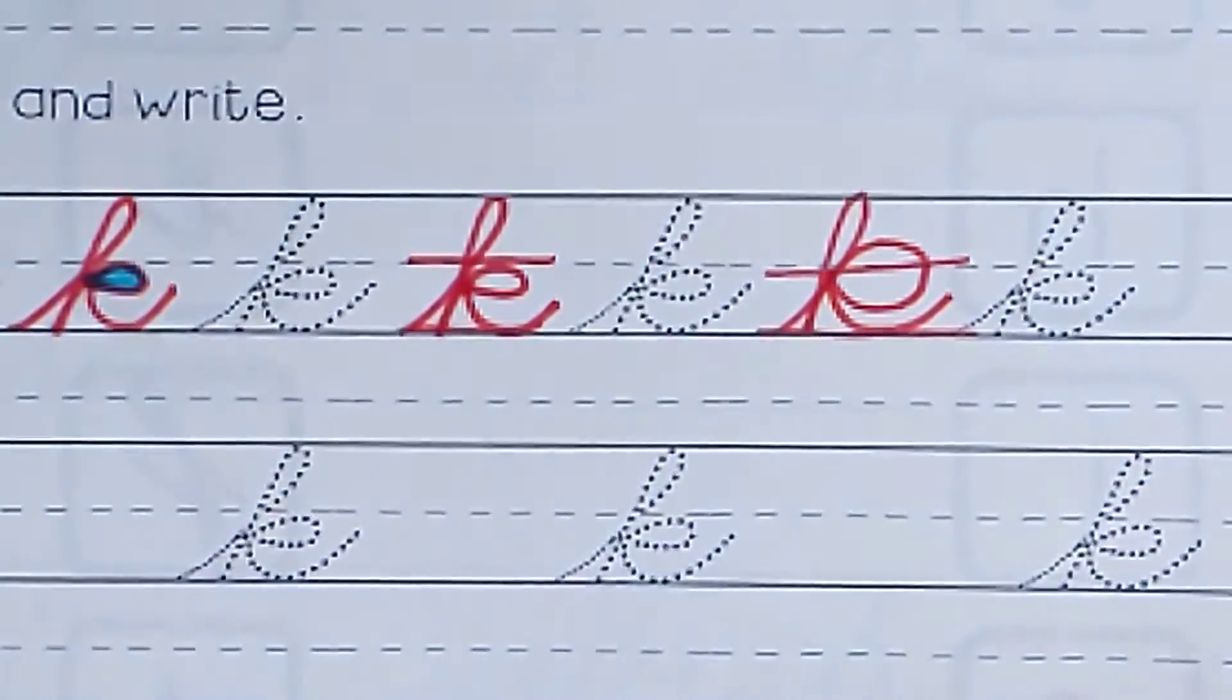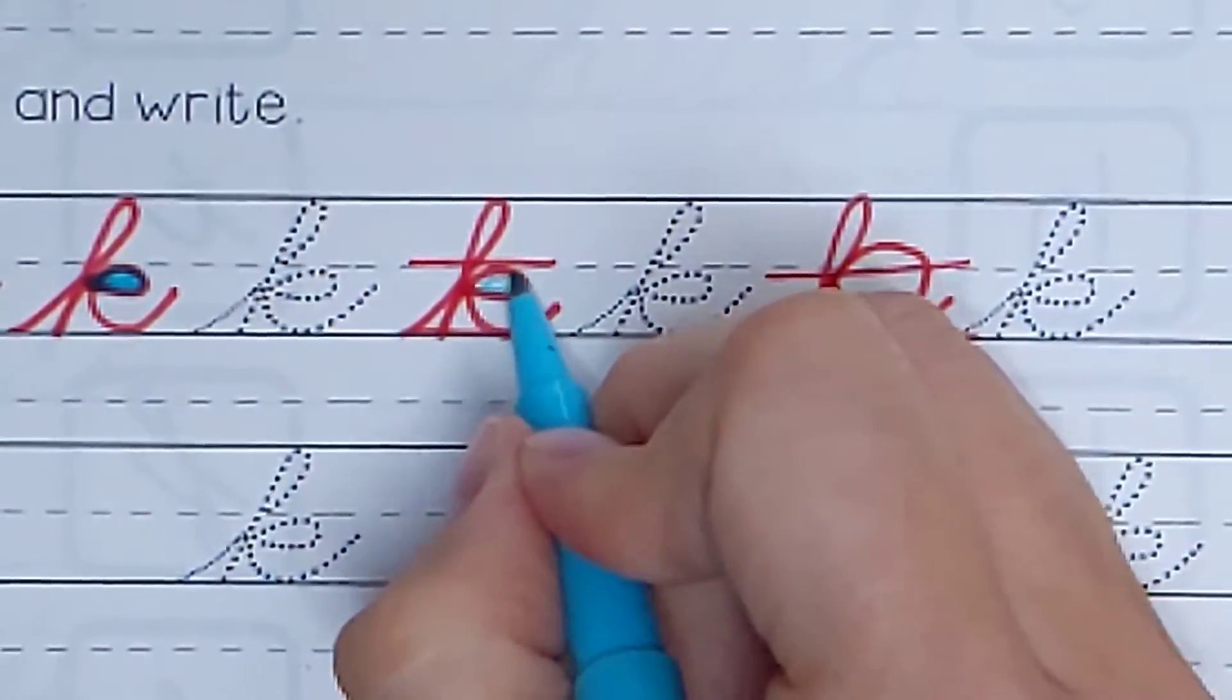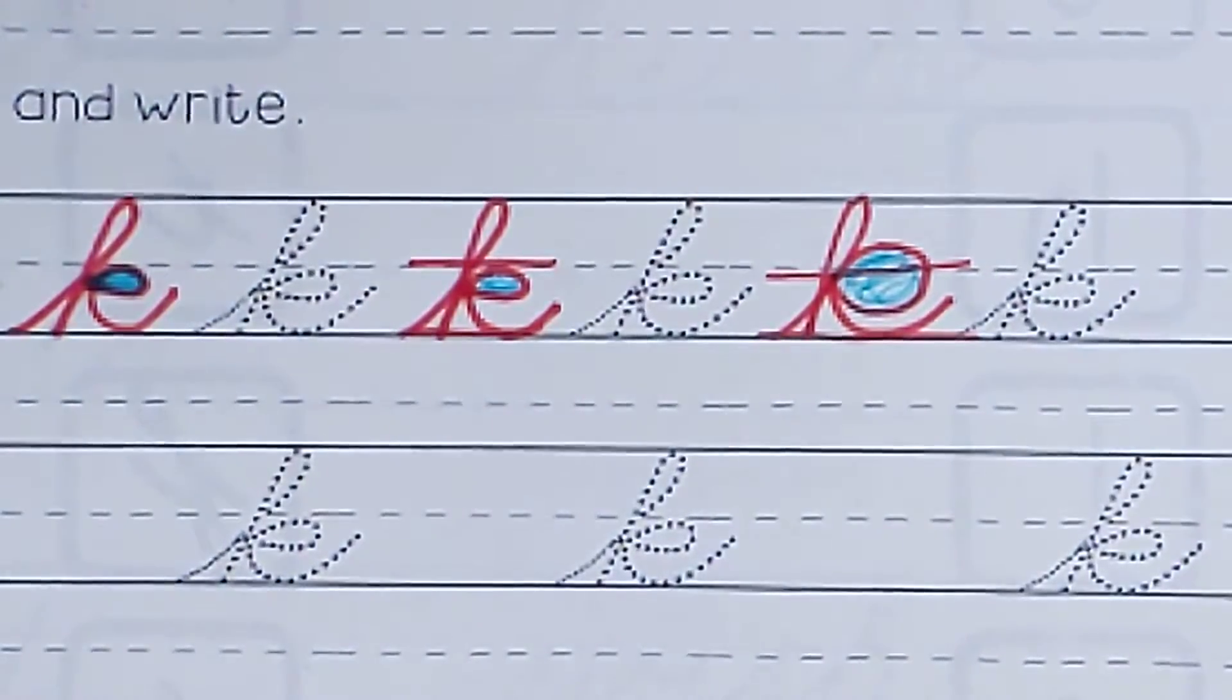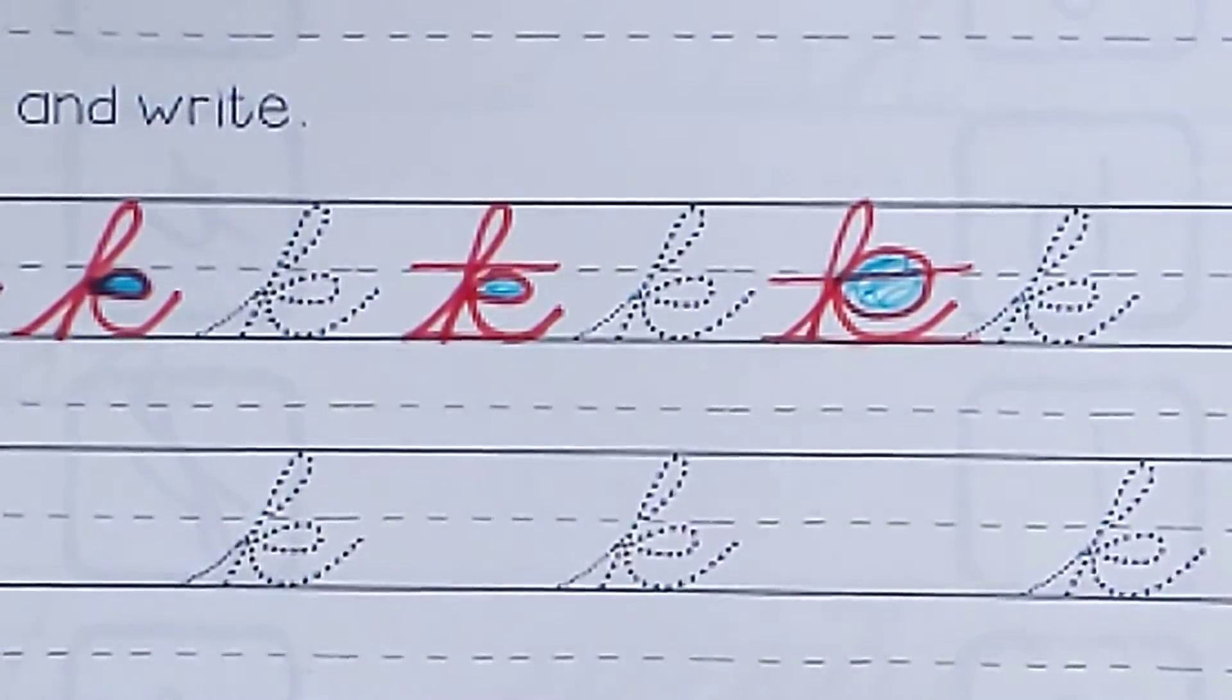Another thing is, remember that teardrop is supposed to be pretty small. And this one is humongous. That actually looks more like an oval than a teardrop. So make sure that you're not going too tall and that you're not making that teardrop too wide.